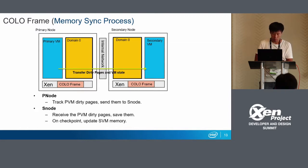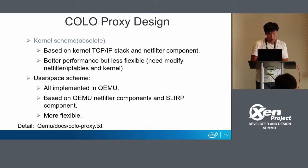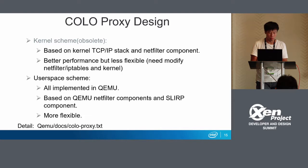That's the COLO frame module, which reuses the live migration code — it just tracks the dirty page and sends to the secondary node. New changes: the new COLO proxy design is currently all implemented in QEMU, based on QEMU's NetFilter component and the SLIRP component, which is a user-space TCP/IP stack. For details, you can see the QEMU docs which have a file named COLO proxy.